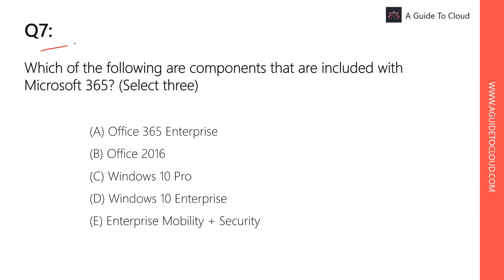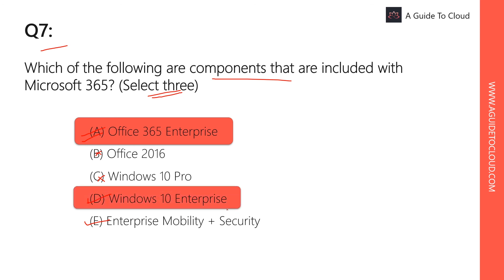Question seven: Which of the following are components included with Microsoft 365? We need to find three answers. Microsoft 365 includes Office 365 suite — depending on your licensing SKU, if it's enterprise, it comes with Office 365 Enterprise, Windows 10 Enterprise, and Enterprise Mobility + Security. It does not come with Office 2016 or Office 10 Pro standalone. The correct answers are A (Office 365 Enterprise), D (Windows 10 Enterprise), and E (Enterprise Mobility Suite).